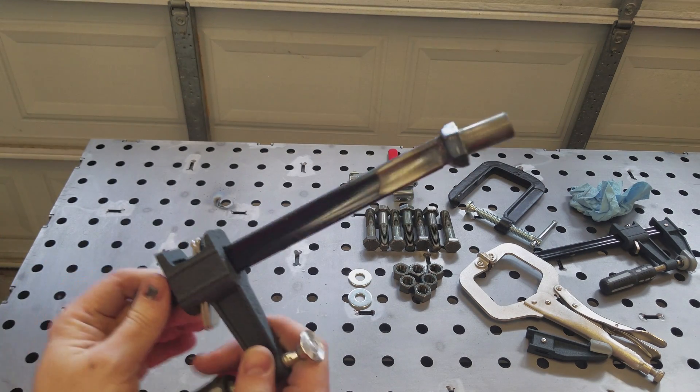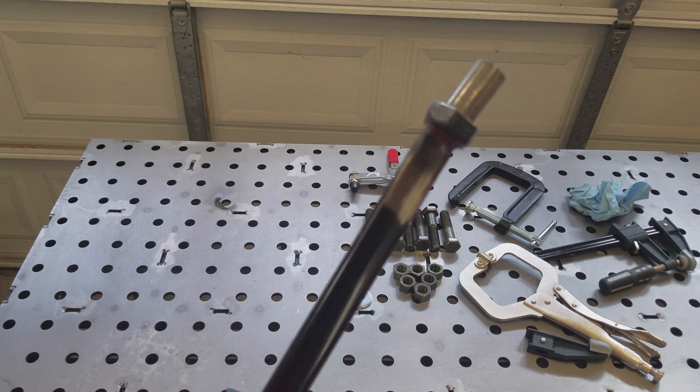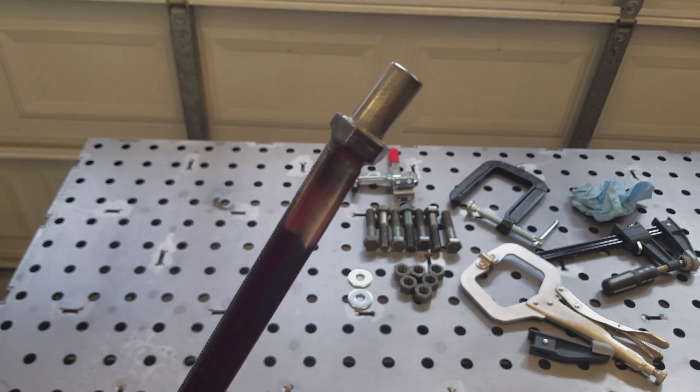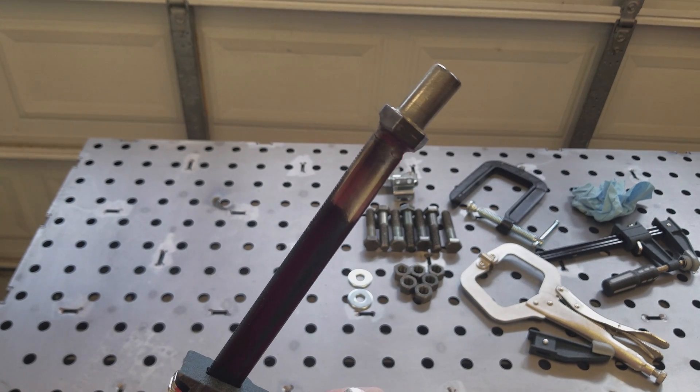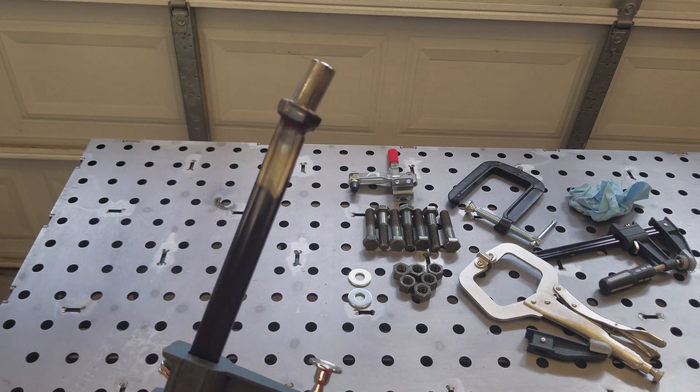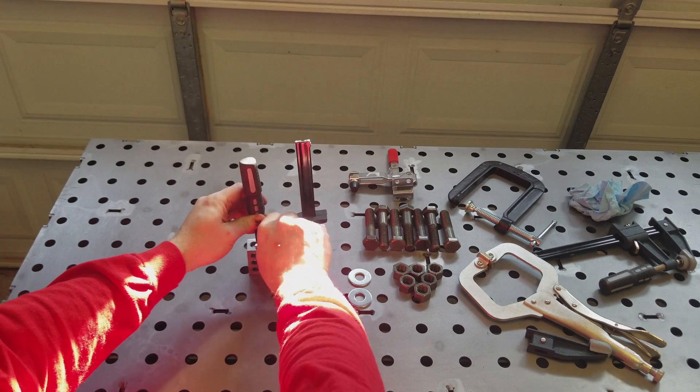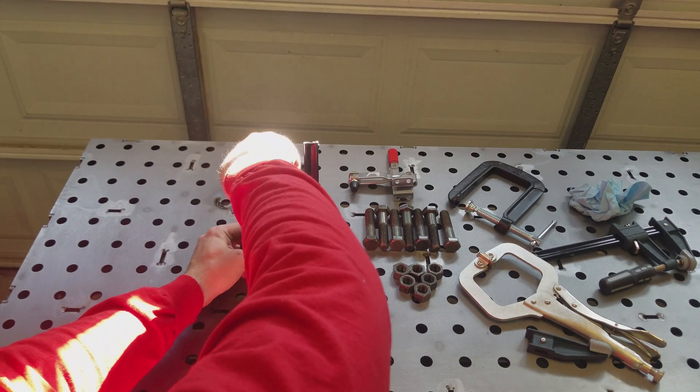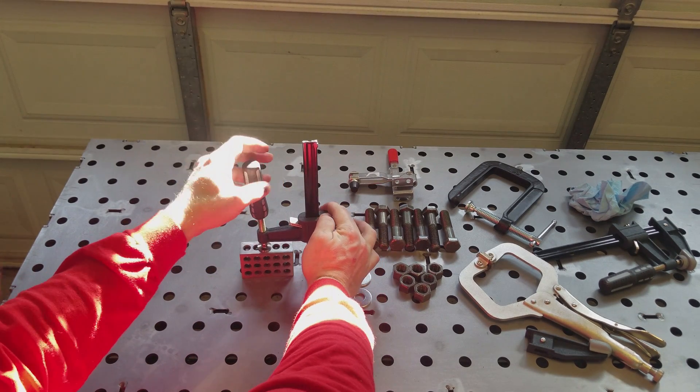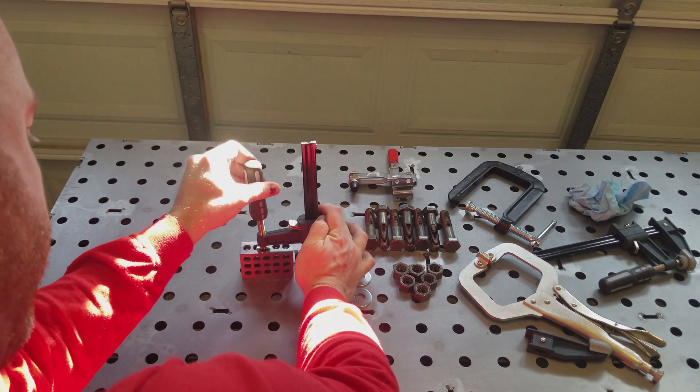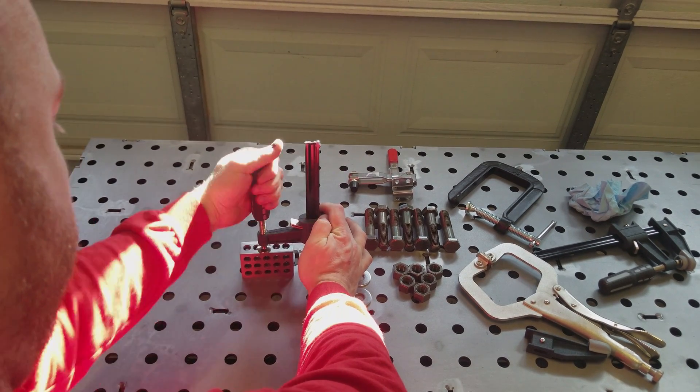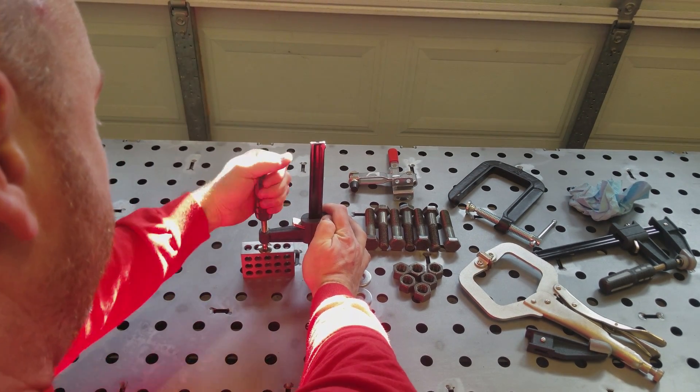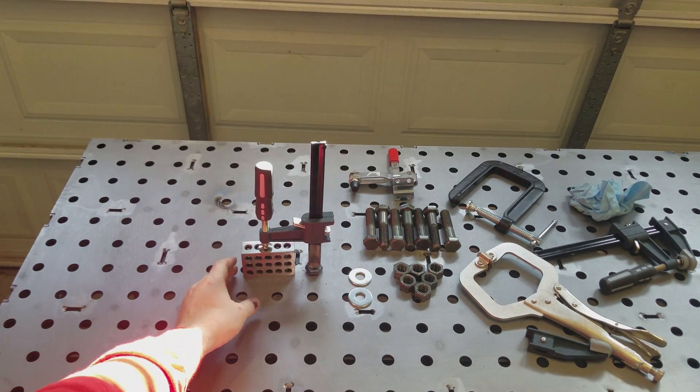All right, ground her cleaned up on the wire wheel. She looks pretty good. Make sure it works. And they're solid. All right, let me grab a piece of tube or something that we can throw in the table and use this clamp on and make sure she locks down.